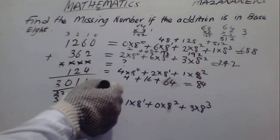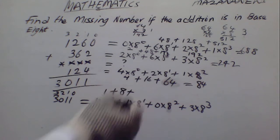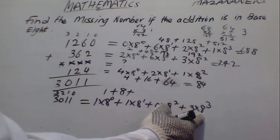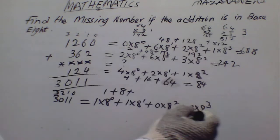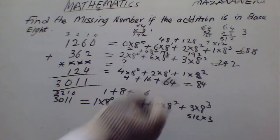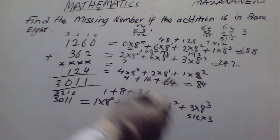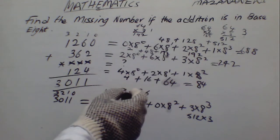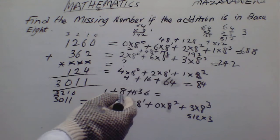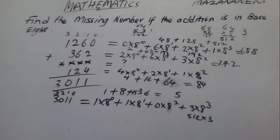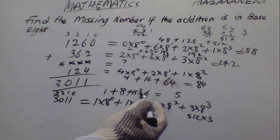So we continue to simplify this. This gives us 1 plus 8 — here is 0. This gives us 512 times 3. This time this gives us 6, and this time this gives us 15. So you add them: 6 plus 8 gives us 14, plus 1 is 15 — carry 1. So that gives us 3.